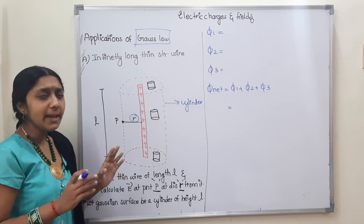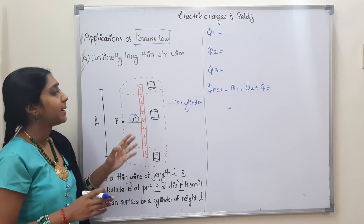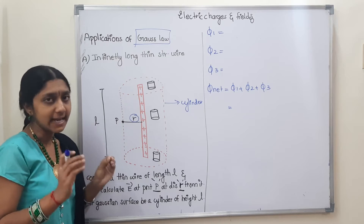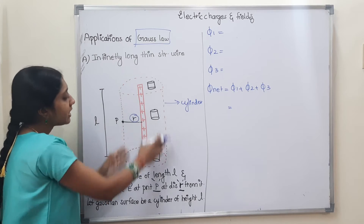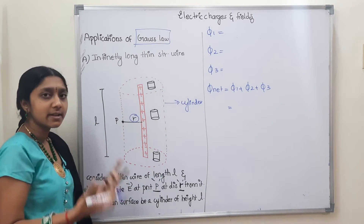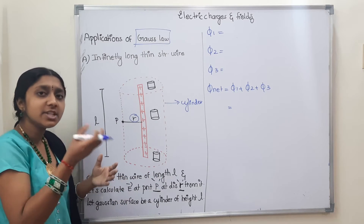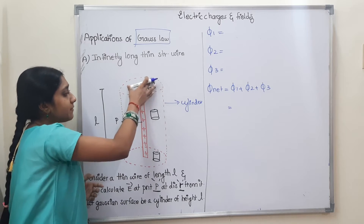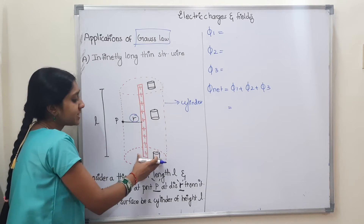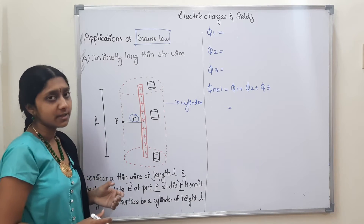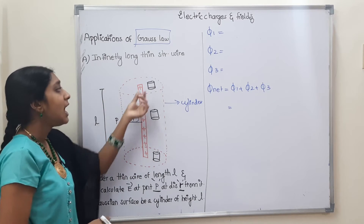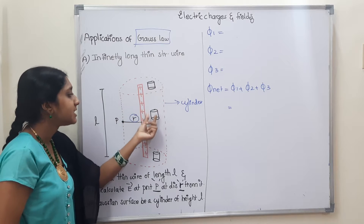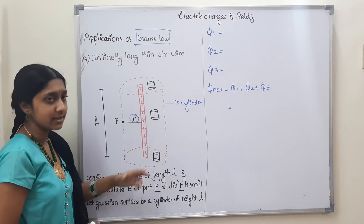Let's consider the Gaussian surface to be a cylinder of height L, where the wire length and the cylinder length are the same.